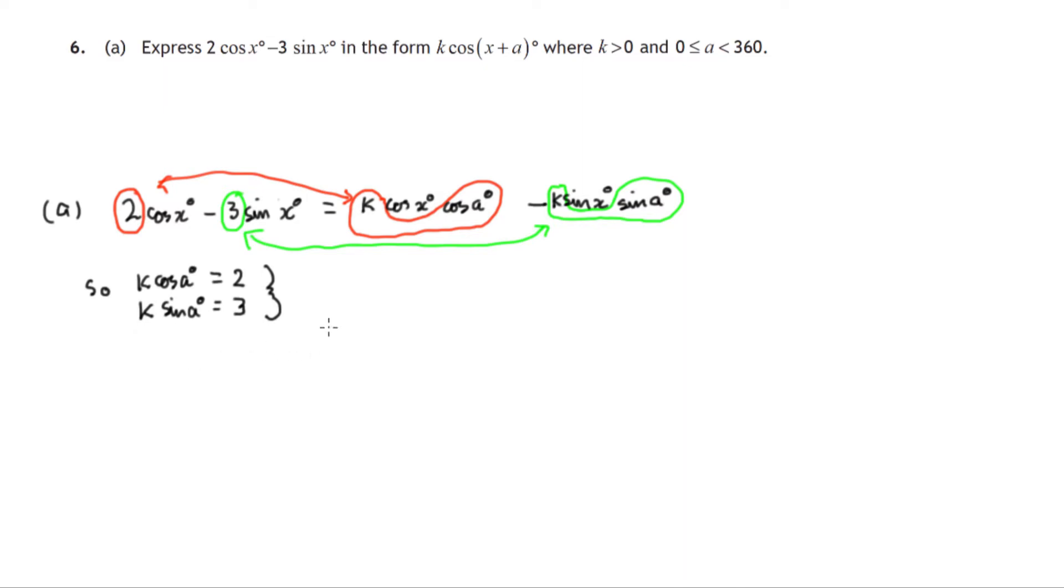Now, to find the angle, what we can do is divide the second equation by the first equation. The reason we're doing this is because we know sin a over cos a gives us tan a. So these k's cancel. Sin a over cos a is tan a. We've now got to solve a trig equation. Find an angle whose tangent is 3 over 2. But which quadrant are we in?